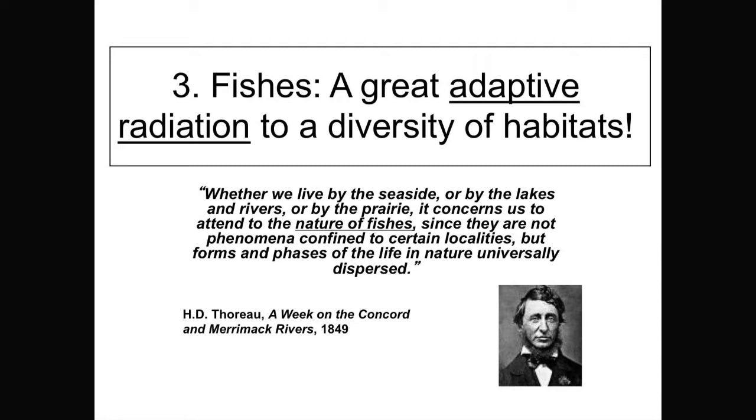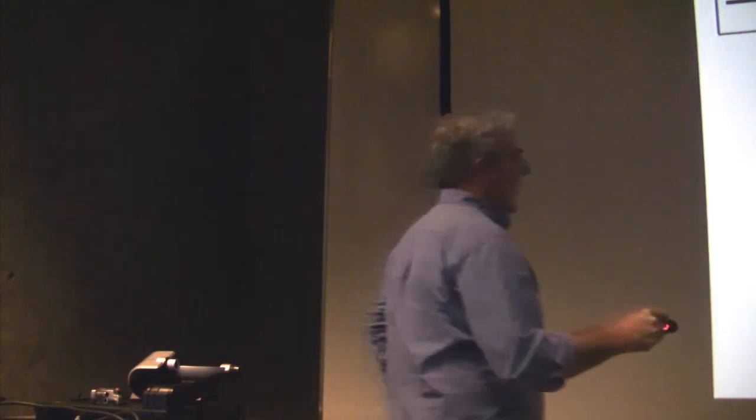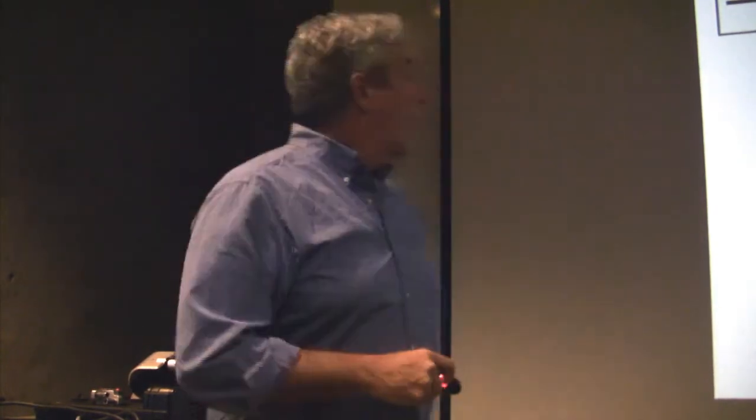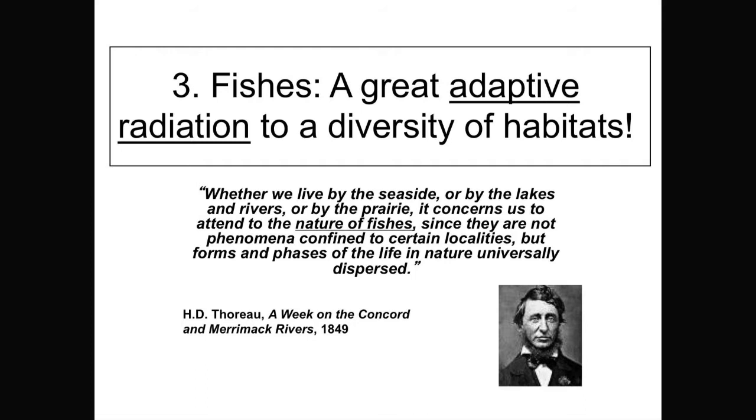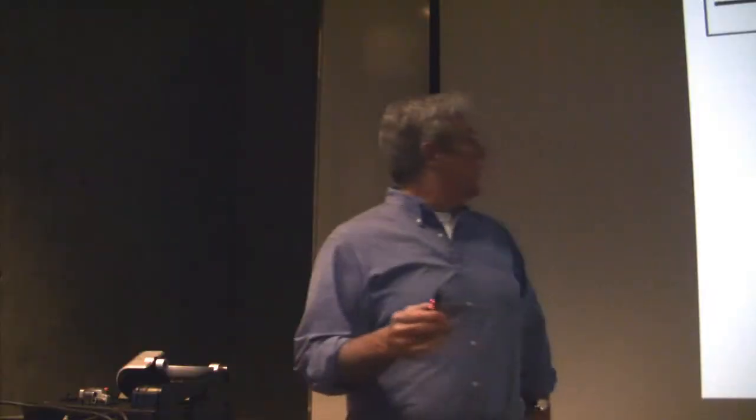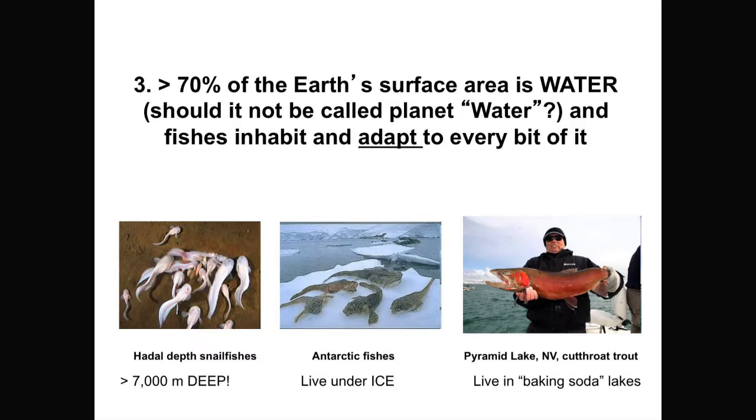Fishes are also amazing because they represent the most spectacular, not only the most numbers of things we call distinct species, but the most spectacular adaptive radiation of all vertebrates, and one of the most spectacular of all animals. And what I mean by an adaptive radiation is just a proliferation of different types that are all adapted to different aspects of the environment. And I've been reading a lot of Henry David Thoreau, this rather strange-looking fellow here, and he wrote in A Week on the Concord and Merrimack Rivers in 1849, whether we live by the seaside or by the lakes and rivers or by the prairie, it concerns us to attend to the nature of fishes, since they are not phenomena confined to certain localities, but forms and phases of the life in nature universally dispersed. And what he meant is they're found everywhere, and they demonstrate adaptations to those incredibly variable environments around the world.